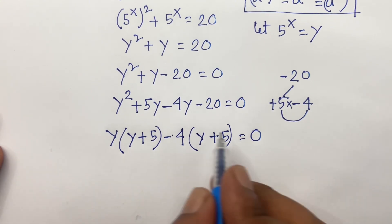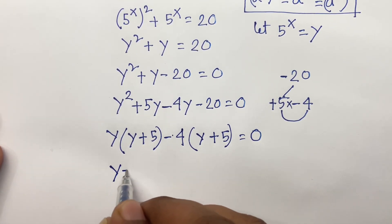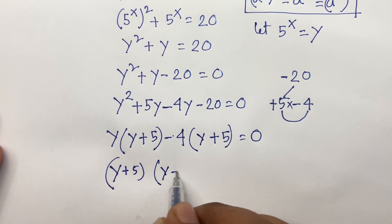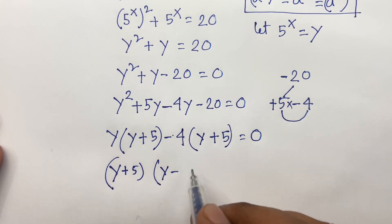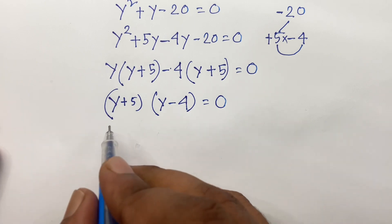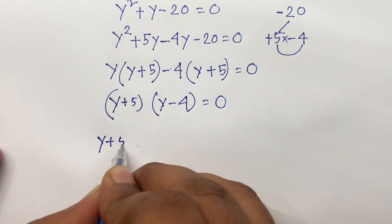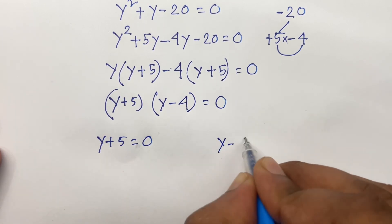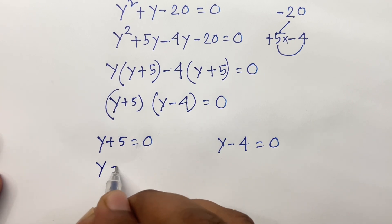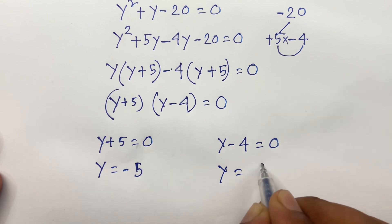Then (y + 5) is common. So we get (y + 5)(y - 4) equals 0. This gives us two terms: y + 5 equals 0 or y - 4 equals 0. So y equals -5 and y equals 4.